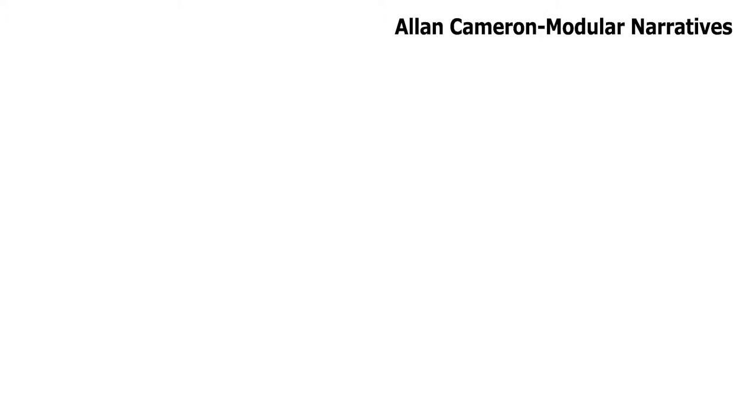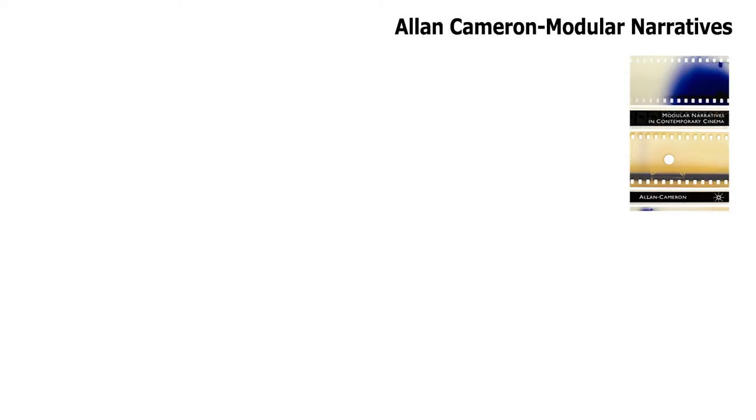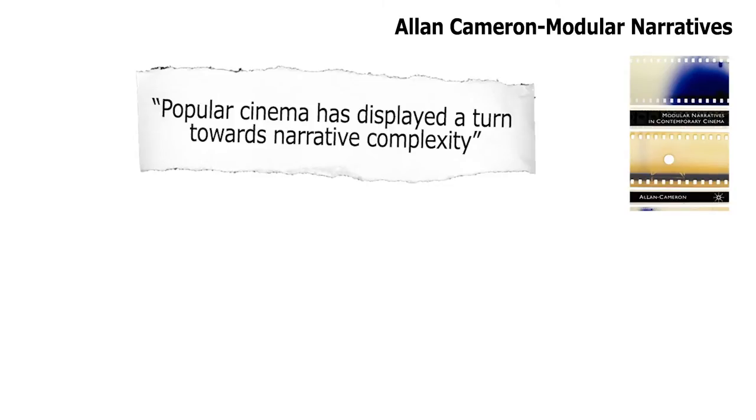That's a fairly historical look at narrative theory, as these theorists were looking at literature. This is still very relevant to us, but one theorist has more recently looked at narrative within cinema. Alan Cameron has identified four different types of modular narrative. Cameron argued that in the last 20 years, popular cinema has displayed a turn towards narrative complexity — in other words, narratives are becoming more complex.